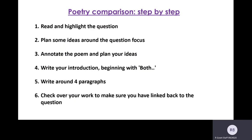Just before we begin, let's remind ourselves of the step-by-step approach that we take in nearly any literature question. Your first instinct is probably to just dive straight in and start annotating and writing, but from my experience, spending a bit more time planning and thinking about your answer delivers the most marks. Step one is reading and highlighting the question. Number two, planning some ideas around the question focus. Number three, annotating the poems and planning your ideas for both poems. Number four, writing your introduction beginning with 'both'. Number five, writing around four paragraphs. Number six, checking over your work. Today I'm just going to take you through steps one to five with some models so you feel confident in approaching the question.